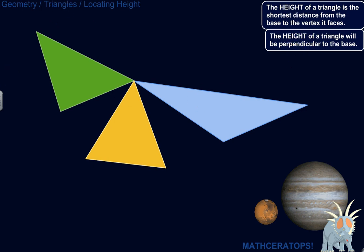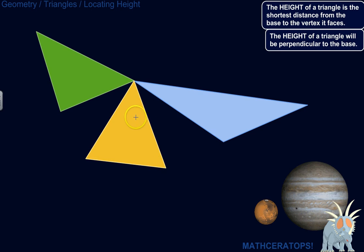So, here's what I mean. You call one side the base — it doesn't matter which side, except that some sides will be easier to calculate or identify the height from. For example, let's start with this isosceles triangle.